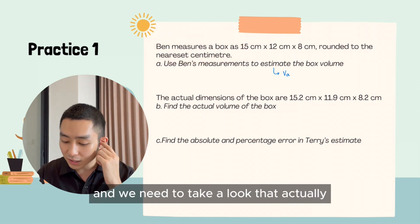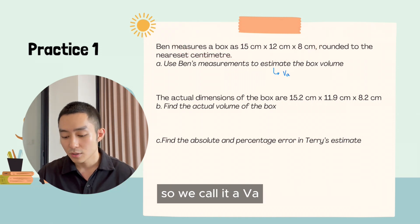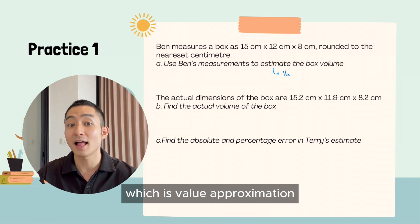And we need to take a look that actually, because this is the estimation of measurement, we call it VA, which is value approximation.